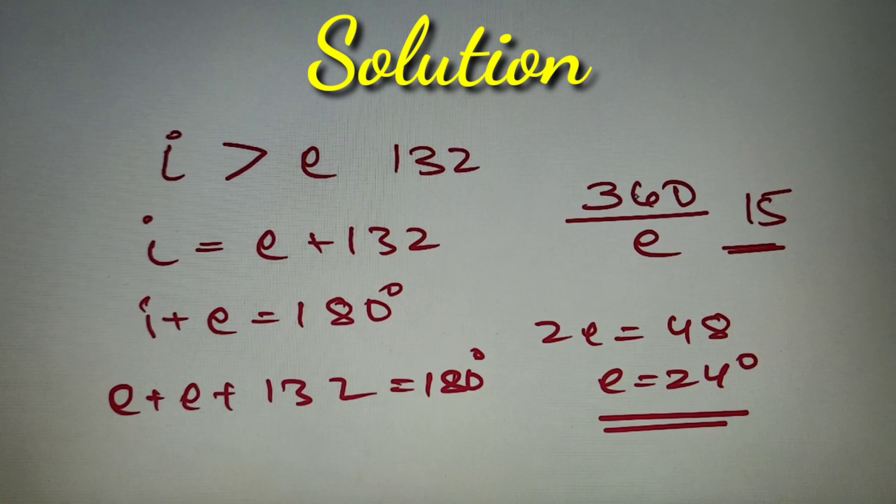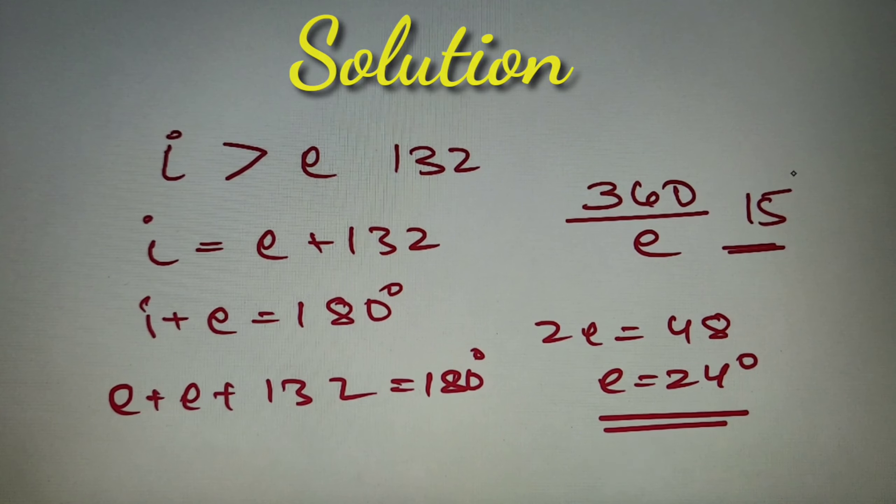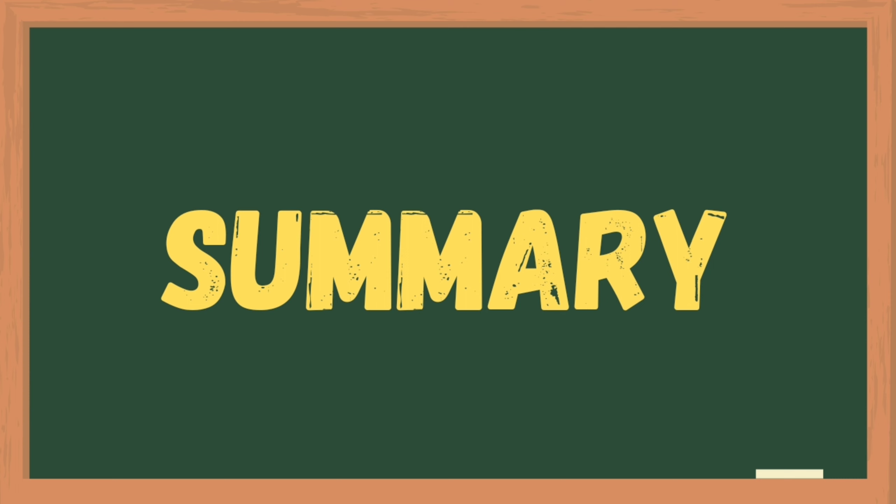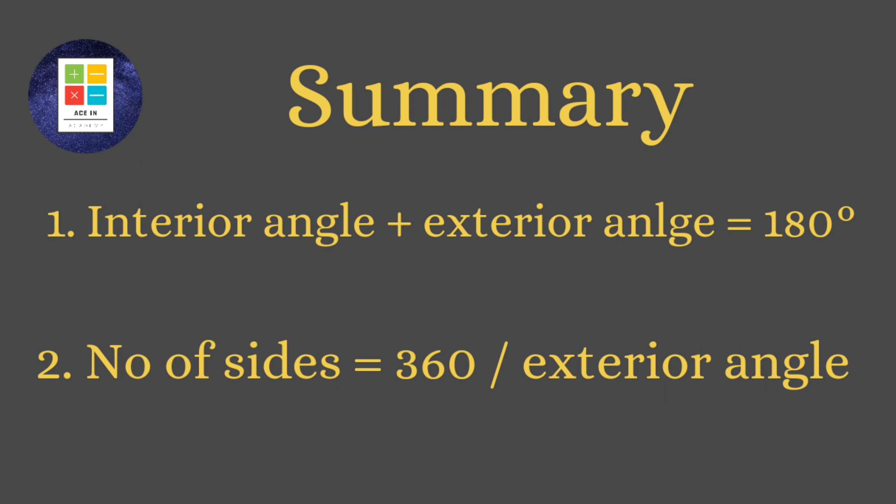Now let's do a quick summary of all the concepts covered in this video. So starting with the summary, the first point that we have covered in this video is the sum of the interior and exterior angle of a regular polygon is equal to 180 degrees.